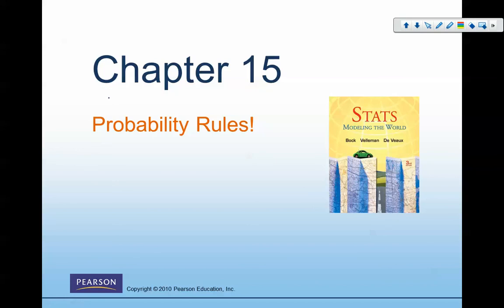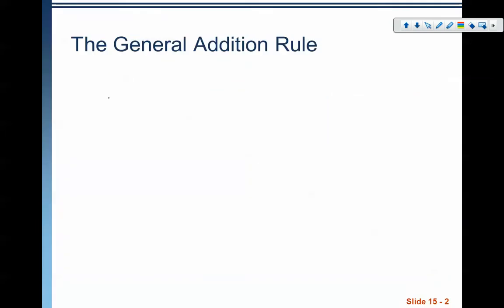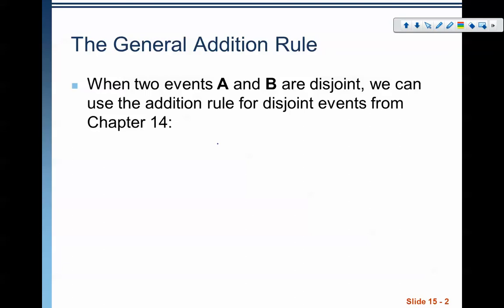Hello, this is chapter 15 in the statistics modeling world curriculum — we are looking at probability. In the last chapter we talked about the addition rule and the multiplication rule. In this chapter we're going to make some modifications to those rules, because we were assuming things like events being disjoint or events being independent. When they are disjoint events, we simply add the probabilities together.